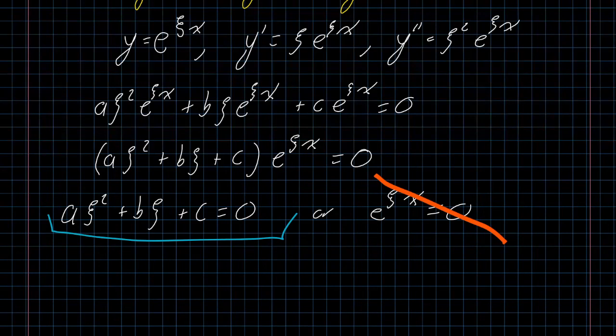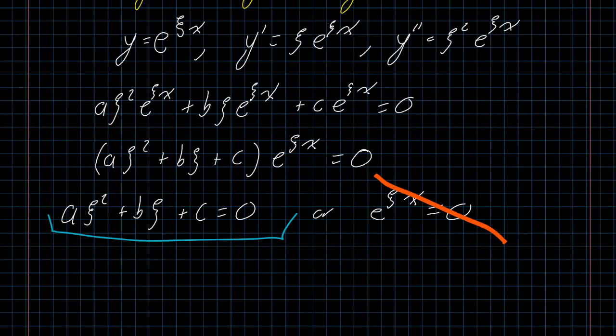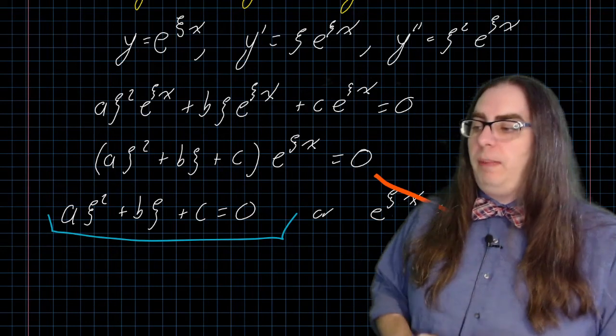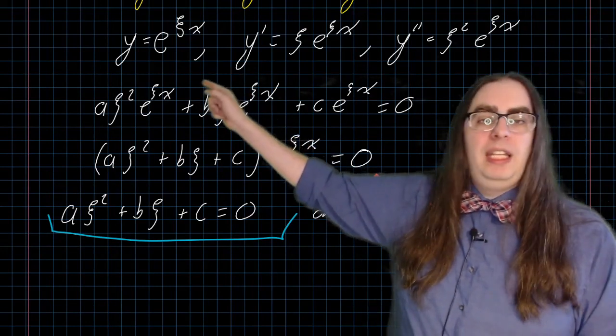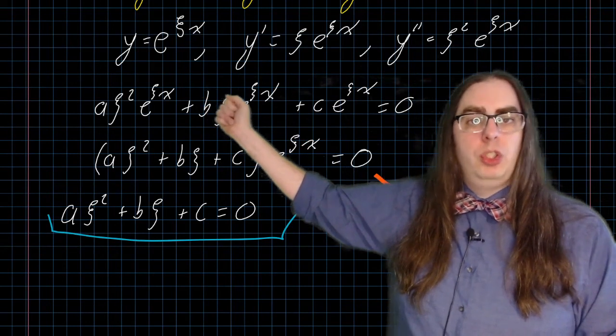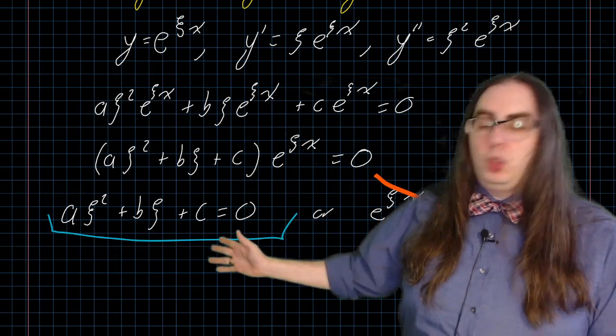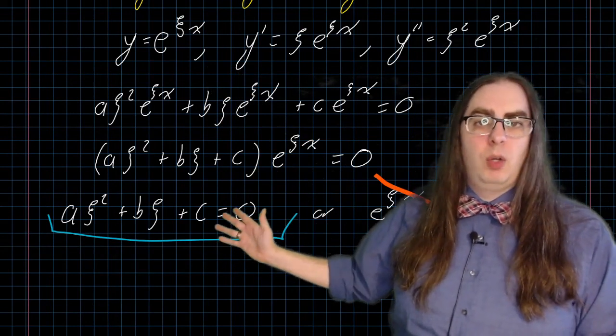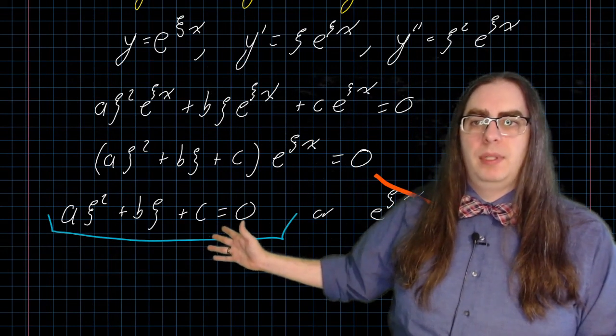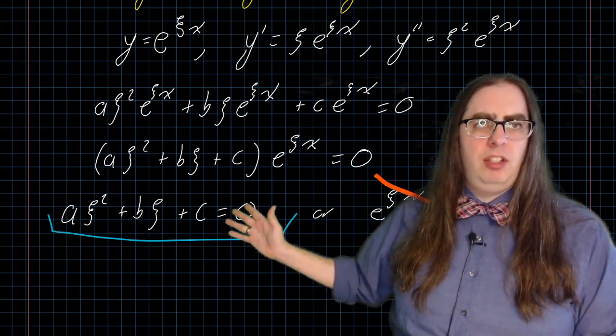And so this is our solution. We have here a quadratic equation in ξ. If we can solve this quadratic equation, then we know the value of ξ that satisfies the assumption that we started with. We assumed that there was some value of ξ up here, so that y equals e to the ξx was a solution to our differential equation. And what we found from that assumption was, sure, it's there, it satisfies this quadratic polynomial equation. And so that will give us a specific solution.